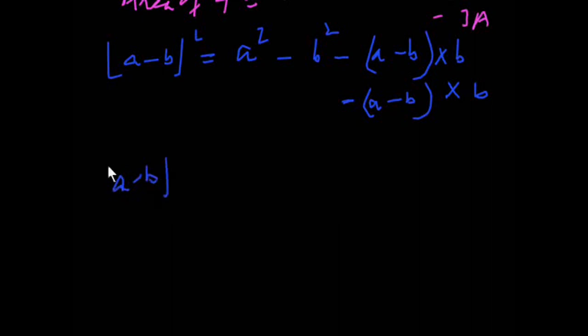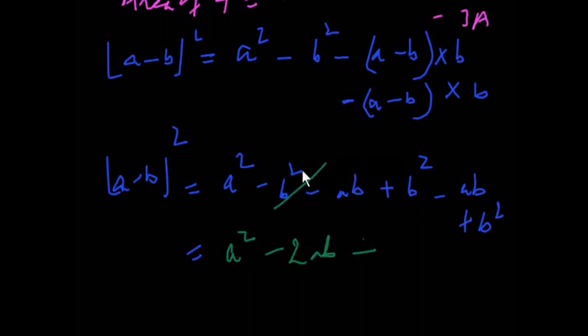Now (a-b)² is equal to a² minus (a-b) times b minus (a-b) times b minus b², minus minus plus b², minus ab plus b². And answer will be a², ab, ab minus 2ab and this will be cut, this will be cut with this and last b². Okay, thank you.